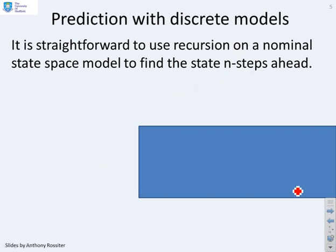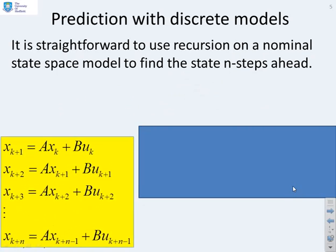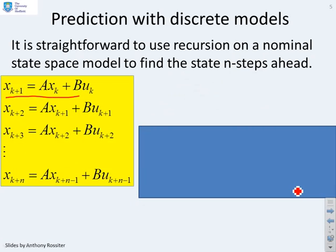Let's look at how you predict with discrete models. Here's the model at sample k which you use to get the predicted state one sample ahead, xk plus 1. I can use the same model at any sample I like, so xk plus 2 equals axk plus 1 plus buk plus 1, and xk plus 3 equals axk plus 2 plus buk plus 2, and so on. This is how I can eventually predict n steps ahead.